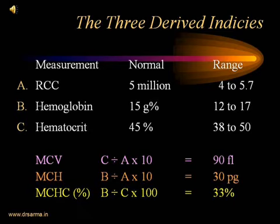MCHC (mean cell hemoglobin concentration) is a ratio of hemoglobin (B) to hematocrit (C): B ÷ C × 100 = 15 ÷ 45 × 100 = 33%. MCHC is a measure useful in conditions like spherocytosis and elliptocytosis. In general, MCV and MCH are the routinely evaluated derived indices. These derived indices are essential for further workup of the anemia workup.